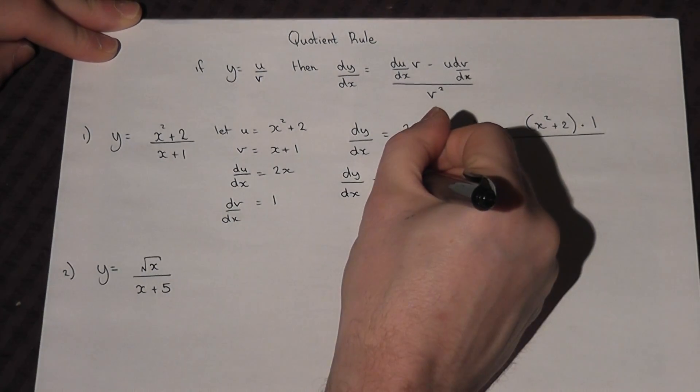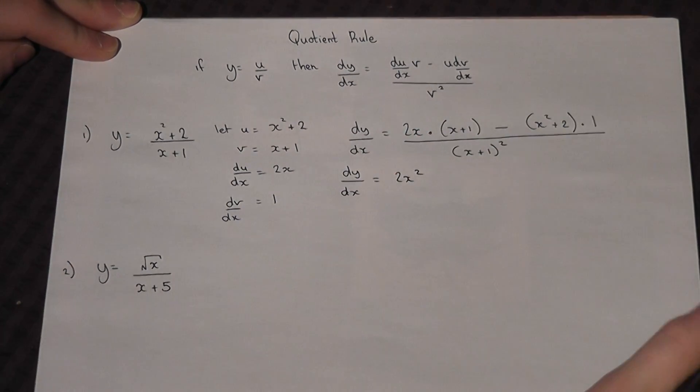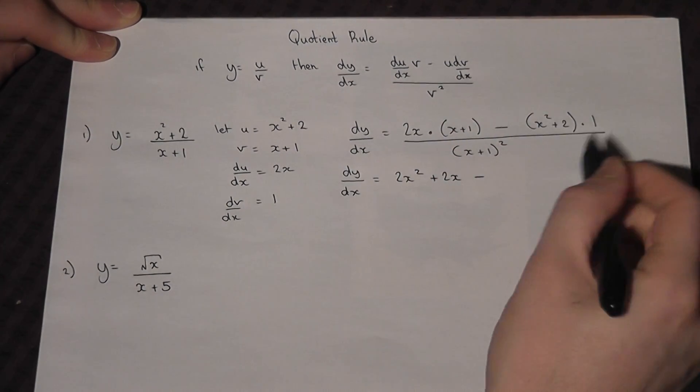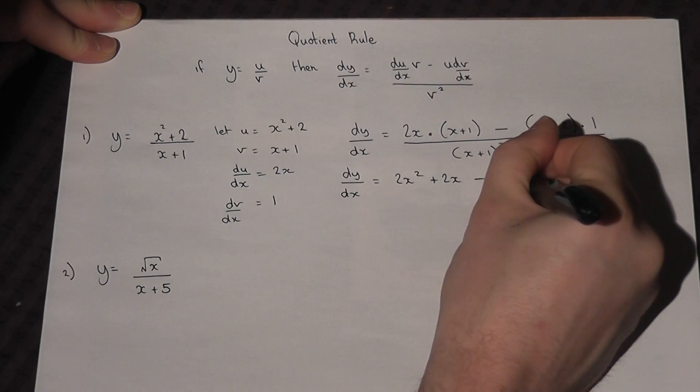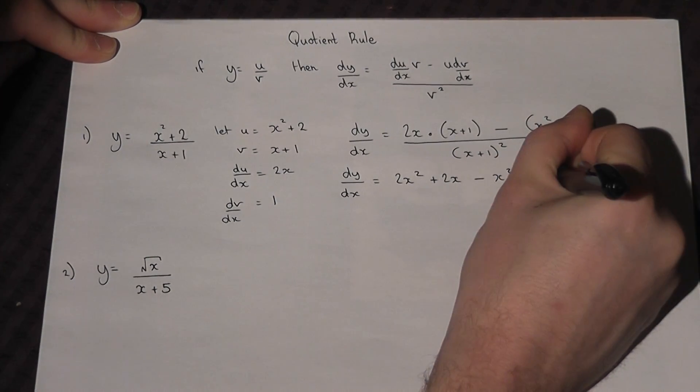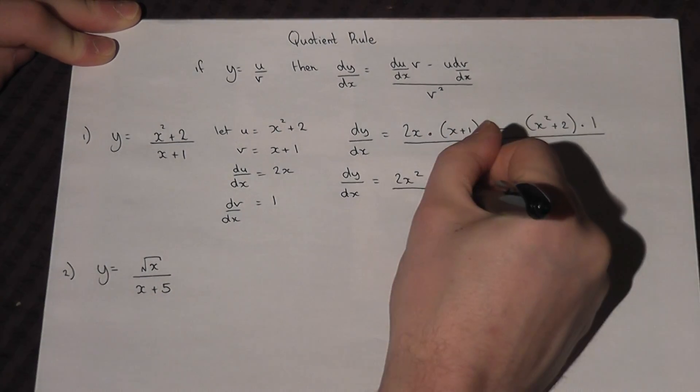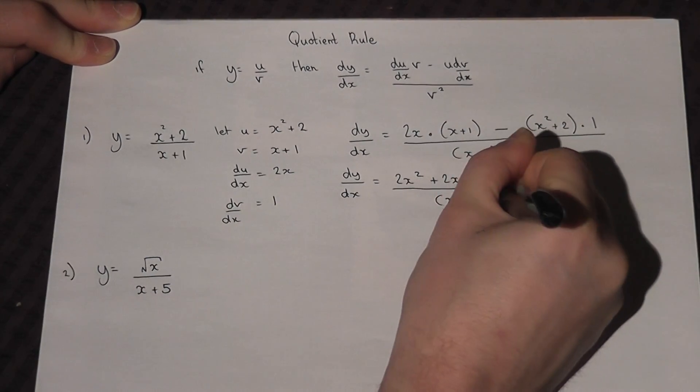2x times 1 is 2x, take away x squared times 1, and take away 2, all over x plus 1 squared.